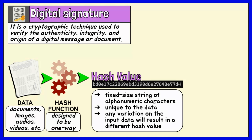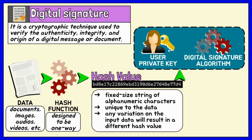Hash functions are designed to be one-way, meaning it should be computationally infeasible to reverse the process and obtain the original input from the hash value. The sender applies a mathematical algorithm to a hash of the message using their private key, generating the digital signature. This means to produce a digital signature, the generated hash must go through an asymmetric encryption process.